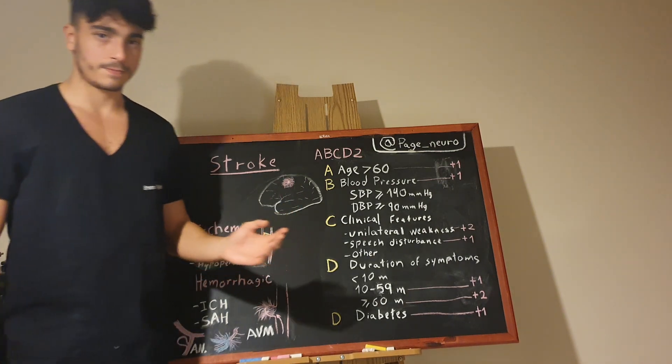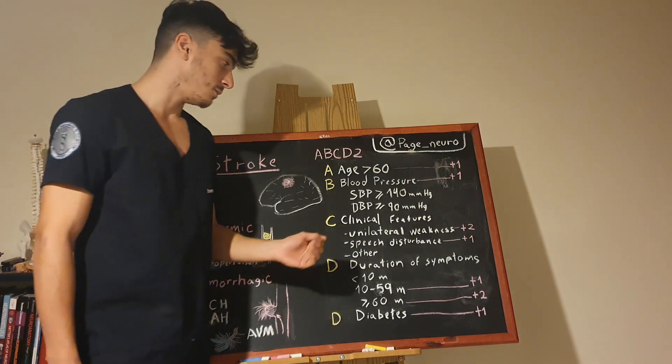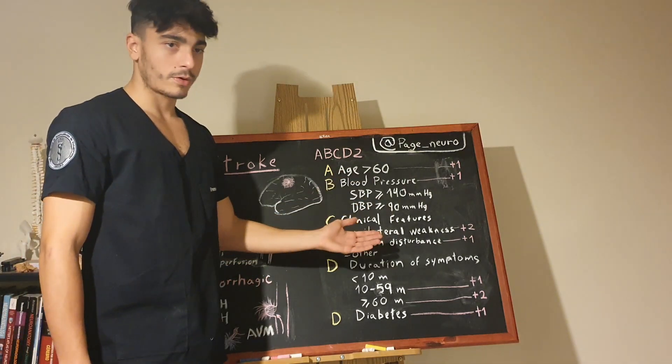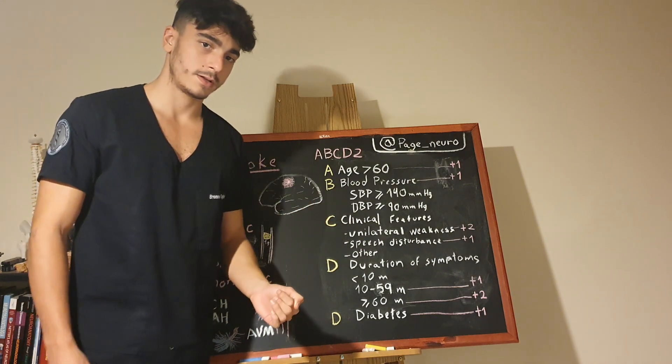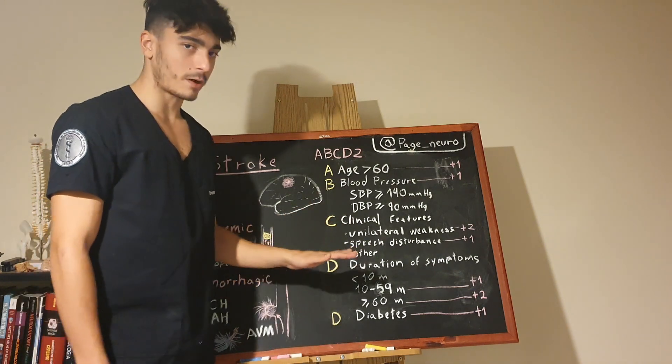And talking about the C, the clinical features would be unilateral weakness, two points added, and speech disturbance, one point. Other symptoms wouldn't punctuate at all.